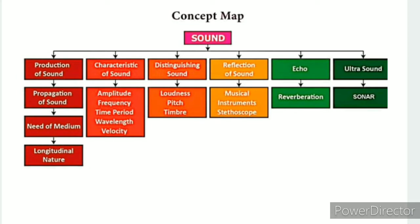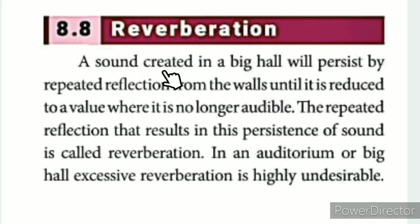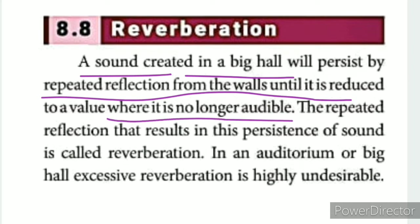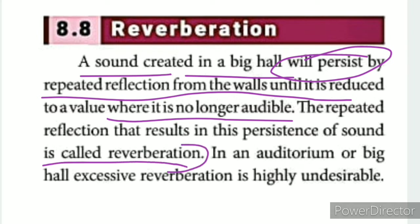Reverberation occurs in an auditorium. We say 'hello' and the sound is continuous — that is the persistence of sound. There are multiple reflections, and the original sound and the multiple reflections overlap. The repeated reflections result in the persistence of sound. A sound created in a big hall will persist by repeated reflection from the walls until it is reduced to a value where it is no longer audible. This is called reverberation.